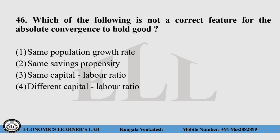Question number 46: Which of the following is not a correct feature for absolute convergence to hold good? Choice 1 — same population growth rate, choice 2 — same savings propensity, choice 3 — same capital and labor ratio, choice 4 — different capital and labor ratio. The right answer is choice number 3, that is same capital labor ratio.